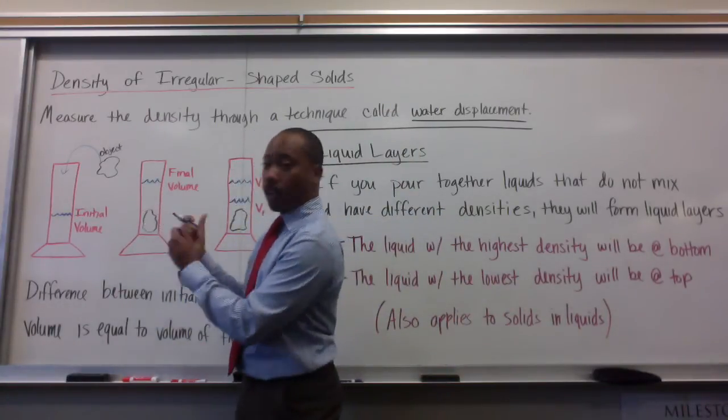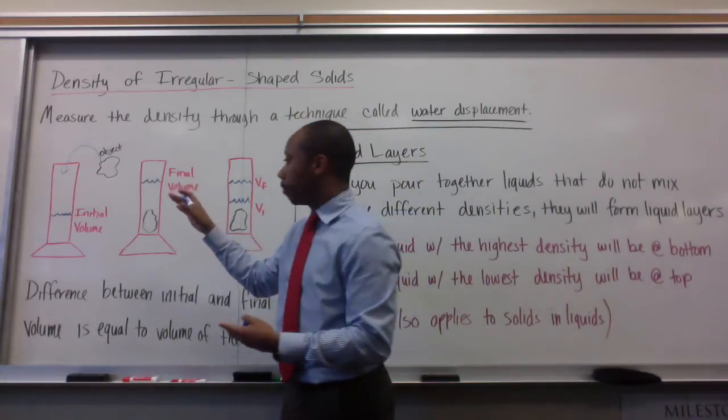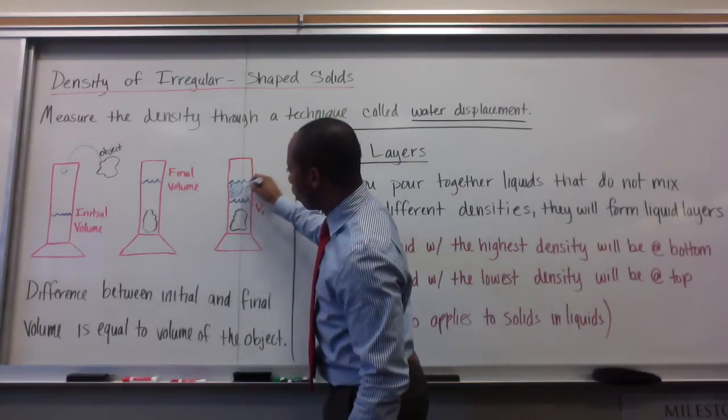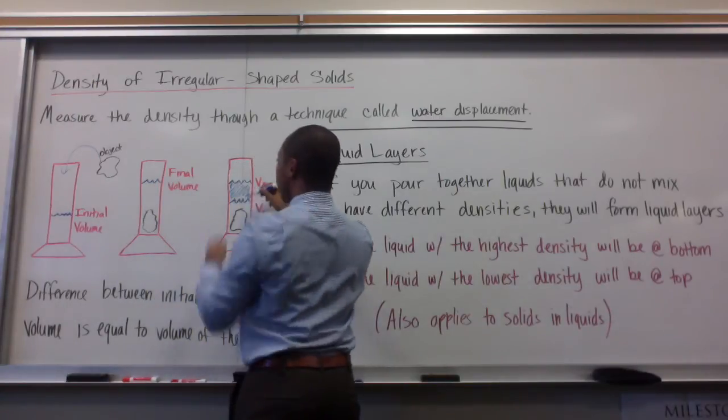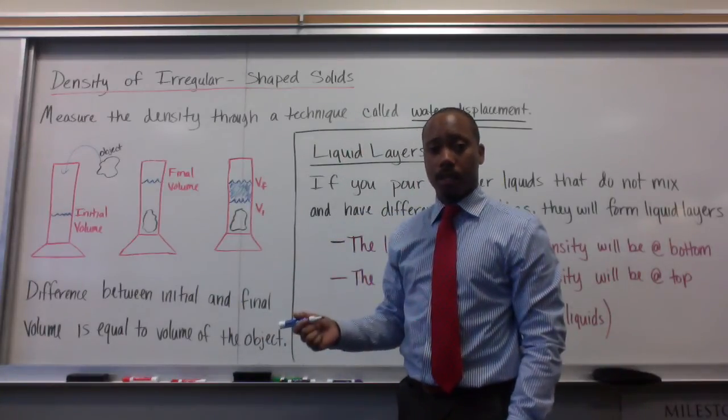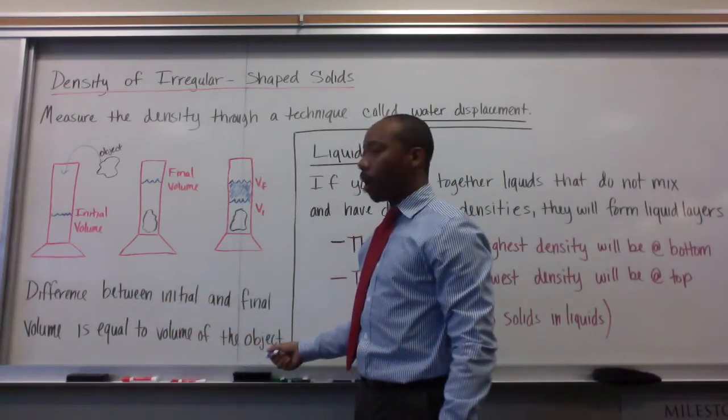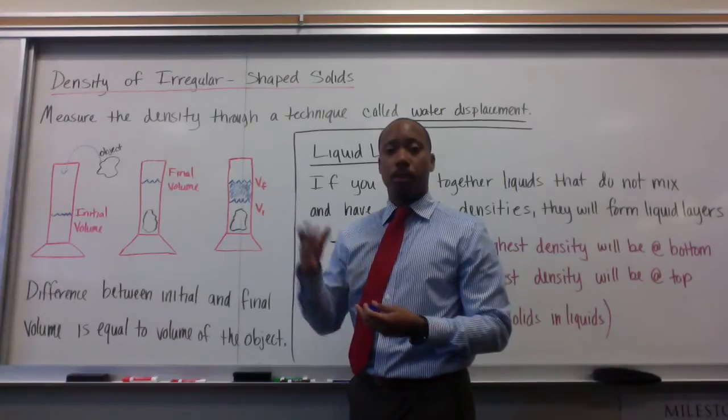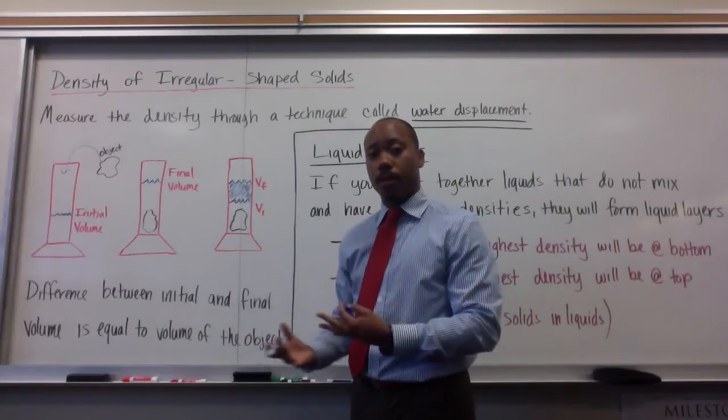Why does it do that? Because this solid object literally displaced that water. Where the water used to be, now the object's there, so the water can't go sideways. It has to only go, it can go nowhere but up. So, it goes up. This distance, or this volume increase, from my initial volume to my final volume, that space in between, this represents the volume of my irregular shaped object, my solid object. The difference between the initial and final volume is equal to the volume of the object. So, we're trying to find the volume of that car, you would find it through water displacement, submerging it in water, watching the difference in volume, and that would be the volume of your object, in this case, the car.